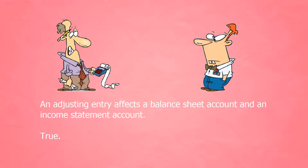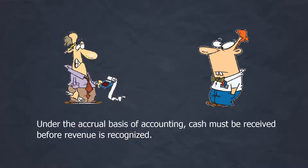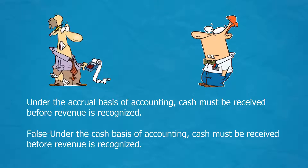An adjusting entry affects a balance sheet account and an income statement account. True. Under the accrual basis of accounting, cash must be received before revenue is recognized. False. Under the cash basis of accounting, cash must be received before revenue is recognized.